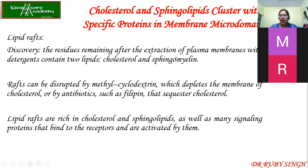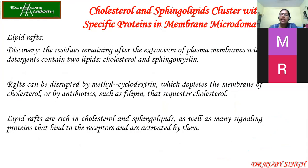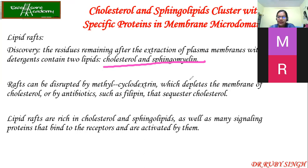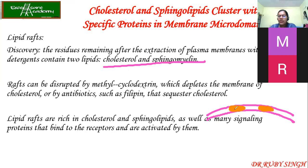Lipid rafts are very important — end questions have come many times from lipid rafts, also related to cholera toxin. When researchers were extracting the plasma membrane of cells, they found that every time, certain patches of phospholipids remained. When analyzed, these patches were always bound together and rich in cholesterol and sphingomyelin. On the plasma membrane, you can see these patches which are rich in cholesterol and sphingolipids. Along with cholesterol and sphingolipids, they also have protein receptors. You are not able to separate them.